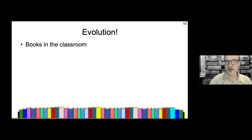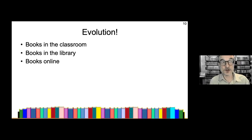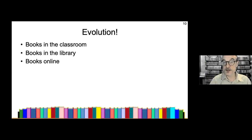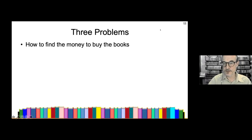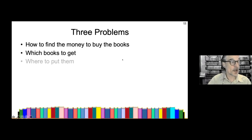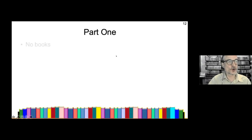I teach at Shinshu University, a national university in Matsumoto in Nagano. We have had over 10 years of an extensive reading program. You need books — without books there's no extensive reading. We started with books in the classroom, then got books into the library, and now we're trying to get books online. There are three problems with books: where to get the money, which books to get, and where to put them.